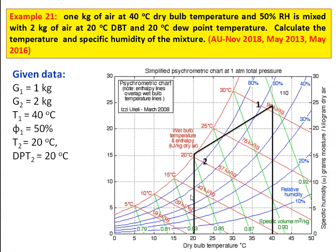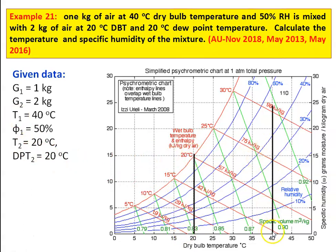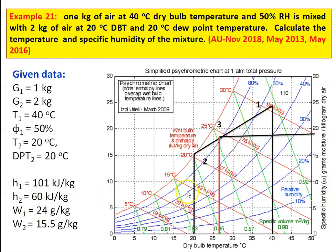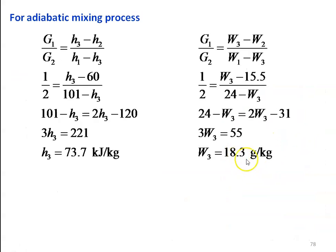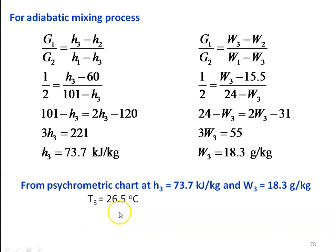For convenience, I repeat the problem. The second condition: T2 = 20°C, dew point temperature is 20°C — locate this point. The initial condition T1 = 40°C and relative humidity 50% — locate this point and draw the vertical line. This is the process line from 1 to 2. Note down the properties, calculate H3 and W3, then find the temperature. Locate point 3 and find the temperature, which is 26.5°C. The specific humidity of the mixture is 18.3 g/kg and the temperature is 26.5°C.